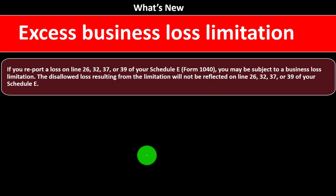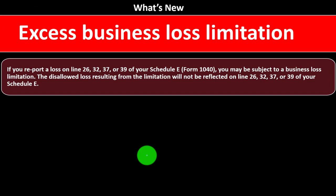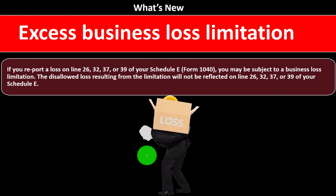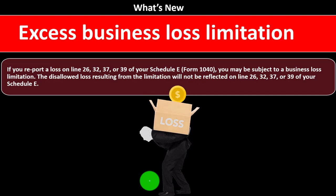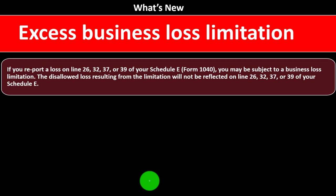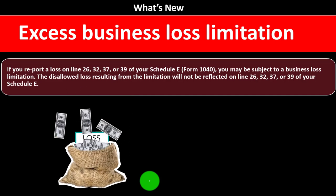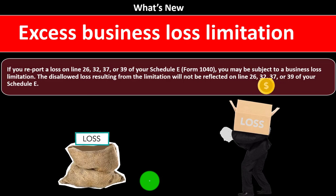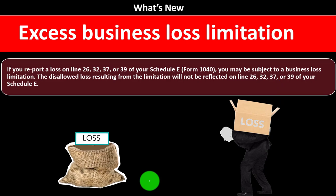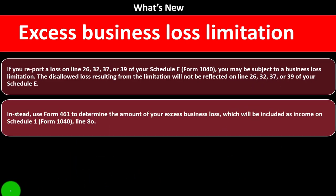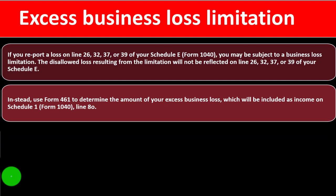So what's new? We have the excess business loss limitation. If you report a loss on line 26, 32, 37, or 39 of your Schedule E Form 1040, you may be subject to a business loss limitation. The disallowed loss resulting from the limitation will not be reflected on those lines of your Schedule E. Instead, use Form 461 to determine the amount of your excess business loss, which will be included as income on Schedule 1, Form 1040, line 8.